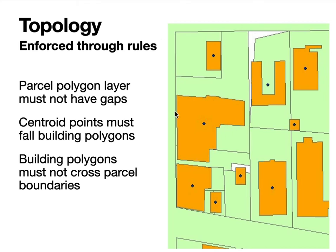Another rule might require that buildings, shown here in tan, must have their centroids contained within them. This may be needed for some future analysis, and errors can creep in during processing. For example, an algorithm that automatically calculates the centroid of a polygon may place it outside the building, creating a topological error between the centroid layer and the building layer. We can also have errors from digitizing where a centroid was simply omitted.